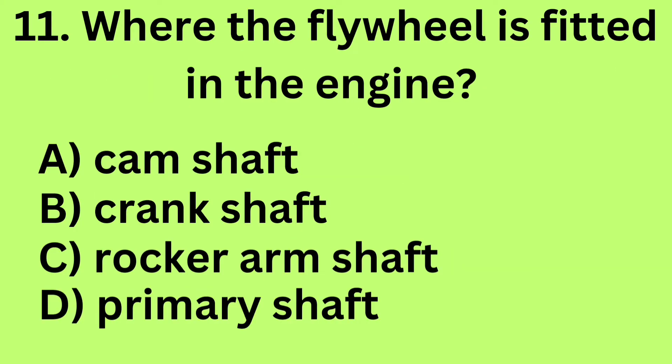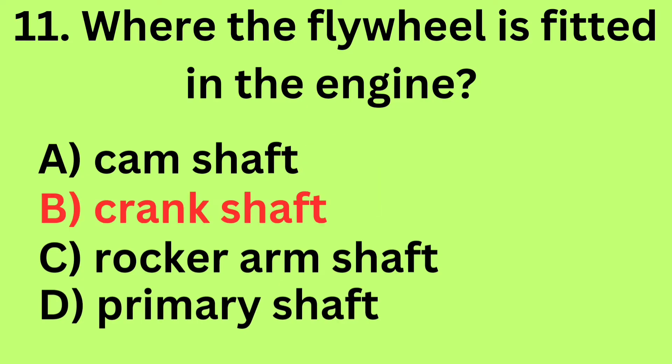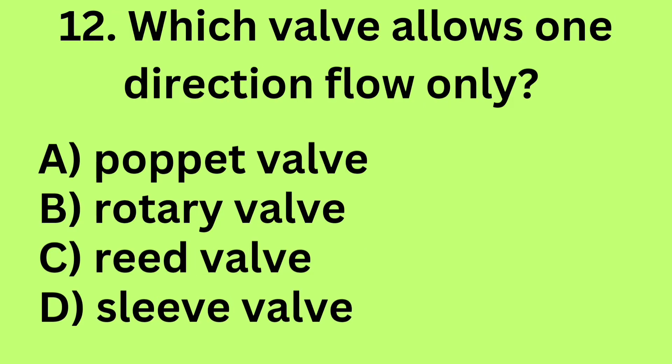Question 11: Where is the flywheel fitted in the engine? A. Camshaft, B. Crankshaft, C. Rocker arm shaft, D. Primary shaft. Answer: B. Crankshaft.